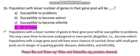Proof دیکھتی ہیں — a population with a lesser number of genes in their gene pool will be susceptible to problems. ٹھیک ہے، فقرے کے مطابق تو susceptible to problems آتا ہے۔ جب problems کو دیکھتی ہیں تو آگے پھر: this may cause them to become endangered or even perish altogether — یعنی وہ extinct ہو سکتی ہیں، problems کی وجہ سے۔